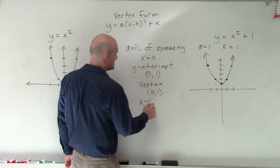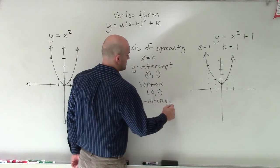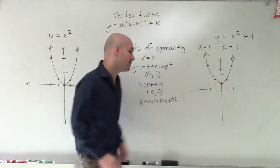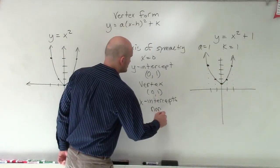And then I look at the x-intercepts. Well, you can see that the graph does not cross the x-axis at any point. So therefore, the x-intercept is going to be none.